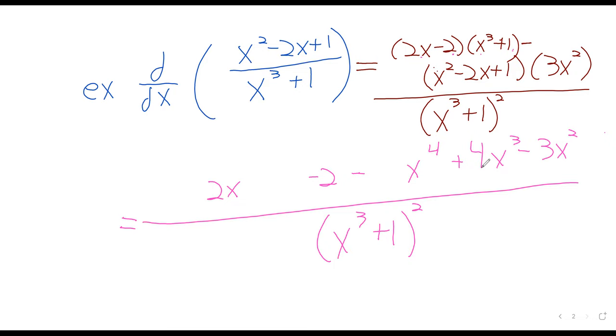That should bring us to the end of section 3.3. The next thing we are going to do is derivatives of trigonometric functions. In a sense there's not much to say about these either, but in another sense it's six math facts that need to be committed to memory. So even if there's not a huge amount to say, it's maybe not the easiest section.